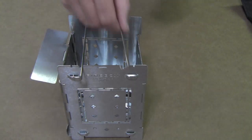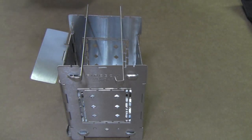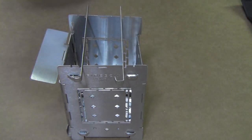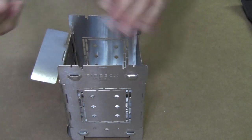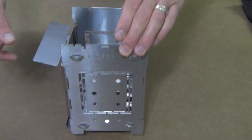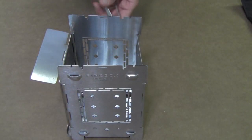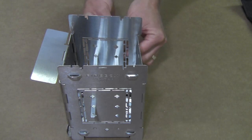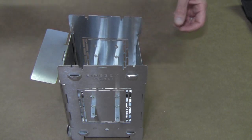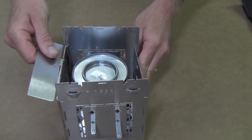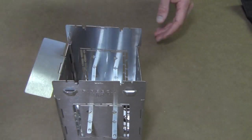They can be slid into this upper position to handle a smaller pot or a cup. There are six different positions on both sides, three on each side one half inch apart, so it gives you all kinds of different levels that you can set fuels up on such as a sterno can or a variety of alcohol stoves.